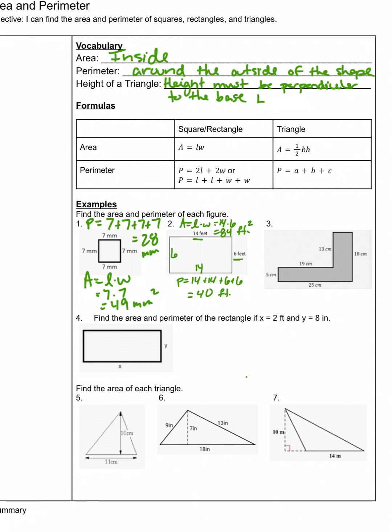Number three is a composite shape, meaning it's made up of more than one shape put together. We draw an imaginary line to separate it into two rectangles. We can cut it either way — it doesn't make a difference which way we do this.